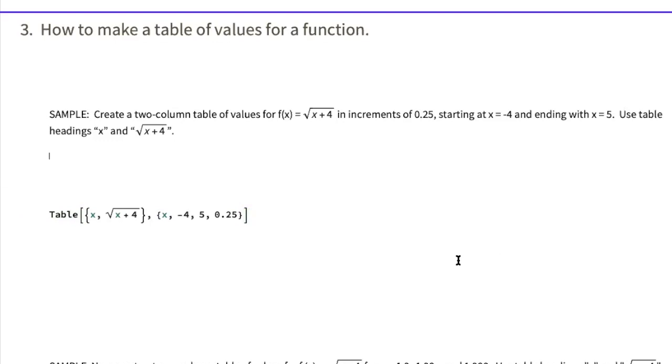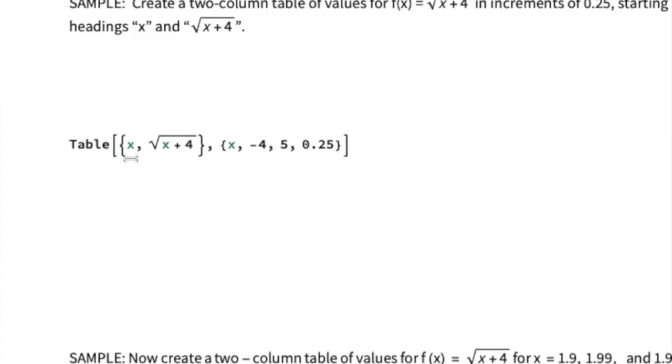The next sample we're going to do is to create a two-column table of values for f(x) = √(x + 4) in increments of 0.25, starting at x = -4 and ending with x = 5. And then we're given some table headings to use. Mathematica has a built-in Table command. Inside the Table command, you list what columns you want to be in your table. So since we have multiple here, we want a two-column table, I have set brackets. And inside of those set brackets, I put x as my first column, comma, square root of x + 4 as my second column. So I have my inputs and my outputs, in other words.